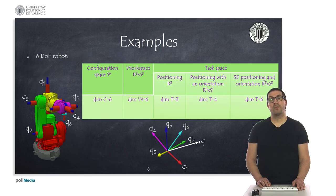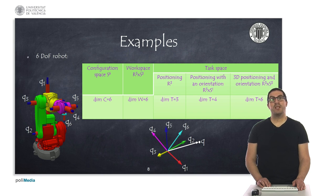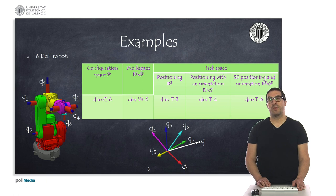In the case of a 6 degrees of freedom robot arm, the configuration space is a subspace of S6, while the workspace is a subspace of R3 × S3. The generalized coordinate vector is a 6-dimensional vector with 6 values corresponding to the angles of each joint. With this robot, we can perform positioning tasks with a 3-dimensional task, positioning with a final orientation giving a 4-dimensional task, or a general 3D position and orientation task corresponding to a 6-dimensional task.